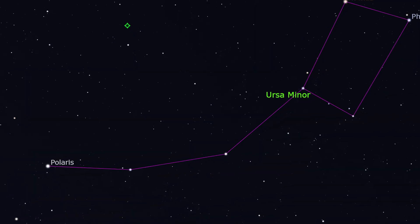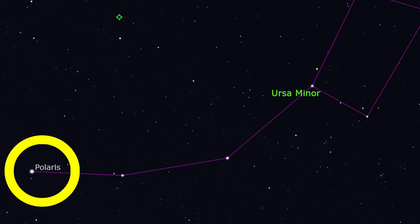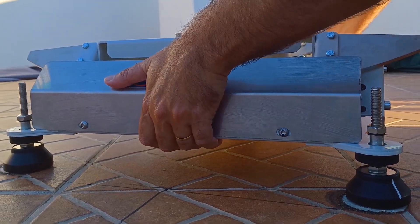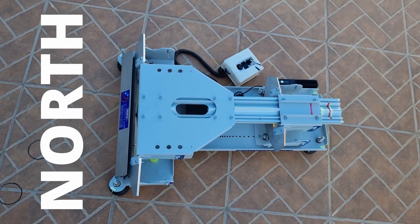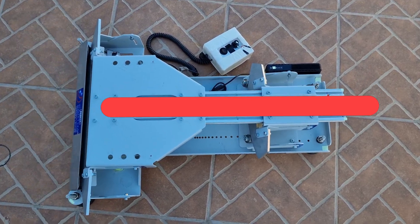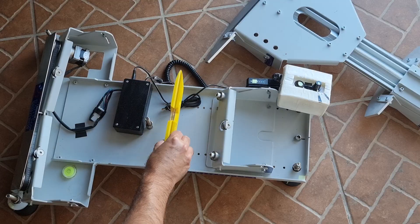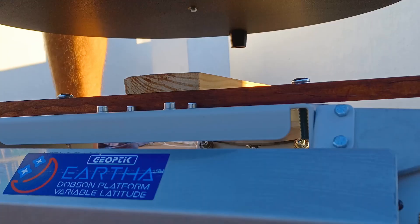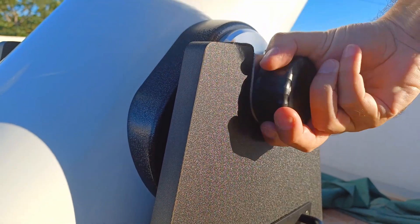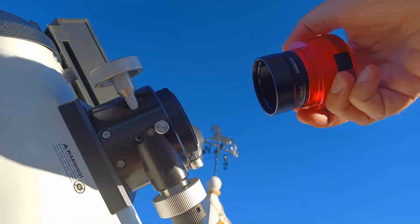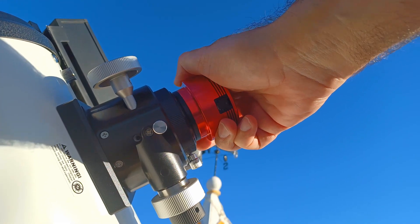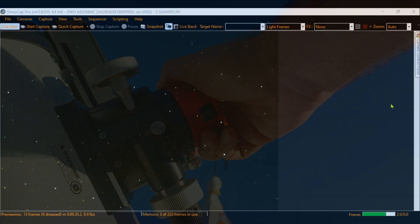To use this method, you will need to see Polaris. Place your equatorial platform roughly pointing to Polaris. Make sure your platform is leveled — use a bubble level to do that. Then place your Dobsonian telescope over the platform. Insert the camera and connect SharpCap software.